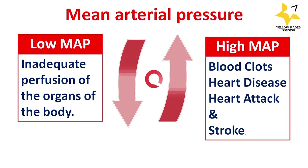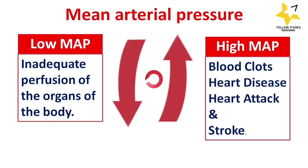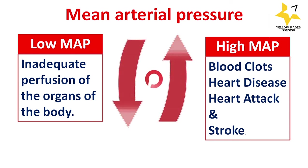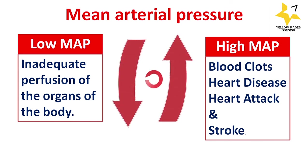In the case of high mean arterial pressure, the goal is to decrease the blood pressure, which may be done by administering nitroglycerin and other medications. In both low and high MAP, it is very important to know the underlying cause and treat it accordingly — which is the ultimate goal.